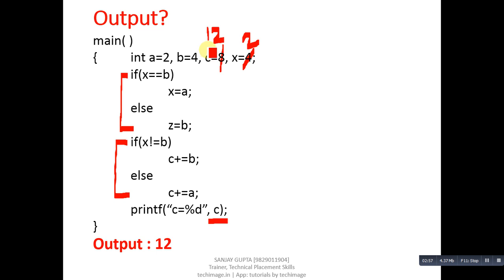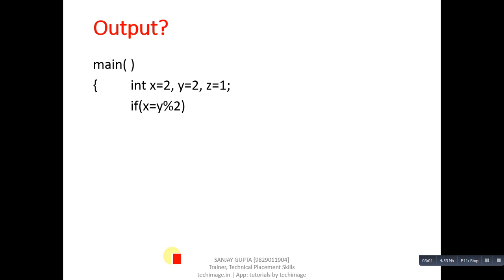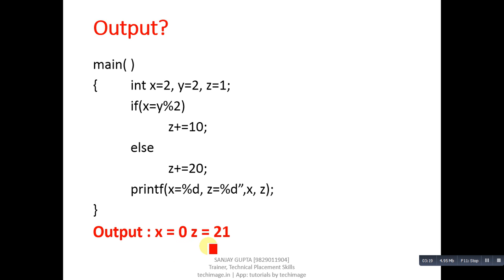This is next code segment. Here three variables x, y, and z are declared. Then one if-else block is there, then printf is printing value of x and z. Output is 0 and 21. Now check how 0 and 21 is printed.